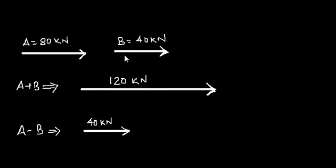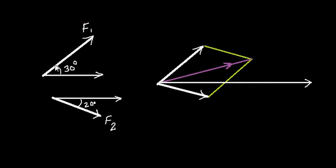This was the case of collinear vectors. Suppose you have vectors acting at different angles with the same reference axis — then you have to consider the magnitude, direction, and the axis of these vectors. For example, force vector f1 acts at 30 degrees with the x-axis and force vector f2 acts at −20 degrees with the x-axis. Here the magnitudes and angles are different and the vectors are not collinear.